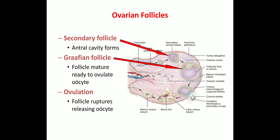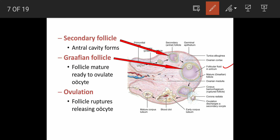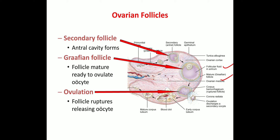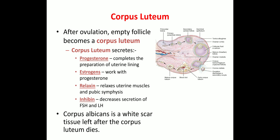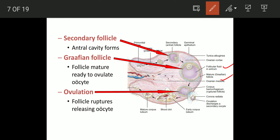The Graafian follicle is the mature follicle ready to ovulate the oocyte. There is follicular fluid in the antrum. Then comes ovulation — the most important step — where the follicle ruptures and releases the oocyte. At this stage there is a corpus haemorrhagicum, a corona radiata, and ovulation discharges a secondary oocyte.